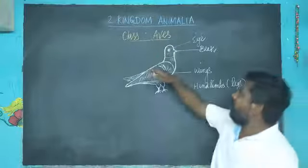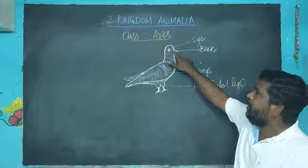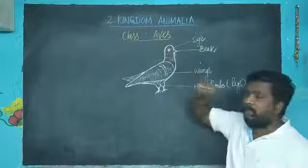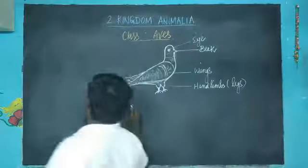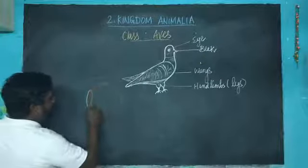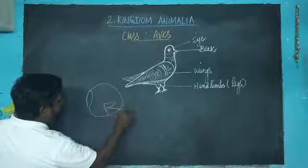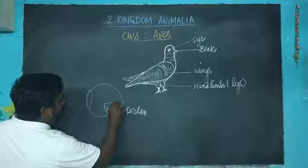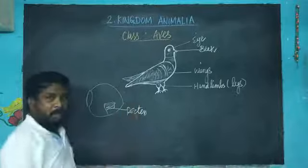The next modification is the mouth is modified into a beak with a bony tongue. The pair of eyes are covered by the nictitating membrane and one more special membrane in the eyes. There is a special membrane that is called the pecten. The pecten is present only in the eyes of birds.